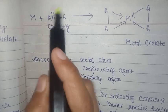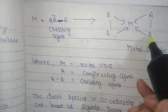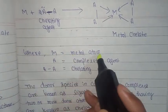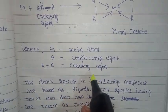M plus 2A with lone pair gives the chelate, where M is equal to metal atom. A is complexing agent and AA is chelating agent.